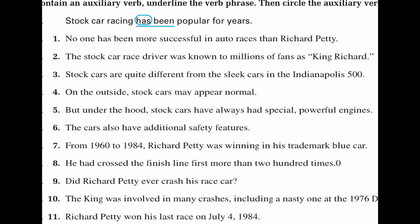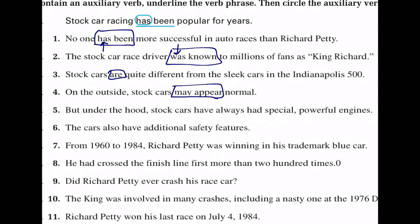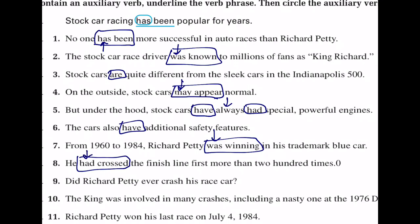Let's try to identify the auxiliary verbs in each sentence. No one has been more successful in auto races than Richard Petty — has been is our verb phrase, and has is functioning as an auxiliary verb. Was known is another verb phrase; was is functioning as an auxiliary verb. Are is just a typical linking verb. May appear — may is an auxiliary verb followed by the main verb appear. Number five, have had — notice always is an adverb that's not part of the verb phrase. Number six is just your standard linking verb, have. Number seven, was winning — this auxiliary verb was gives us a sense of time. Had crossed — had, an auxiliary verb, helps express time.